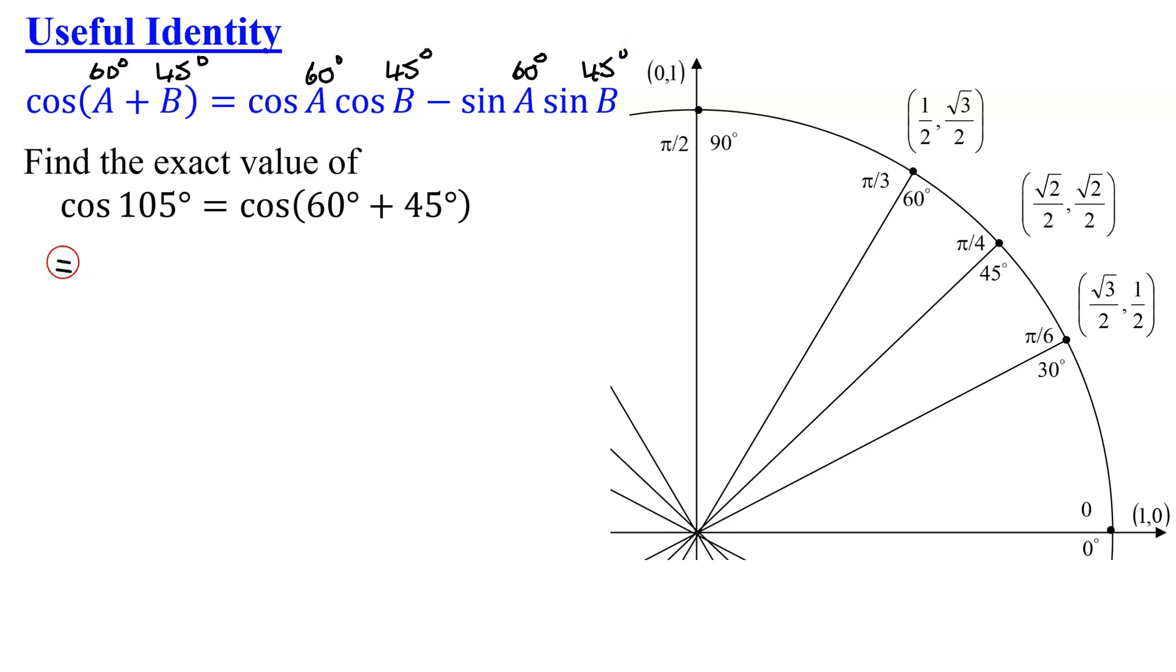So I'm just going to get the cosine of 60 degrees times the cosine of 45 degrees minus the sine of 60 degrees times the sine of 45 degrees. Now, all we have to do is find those values from the unit circle.